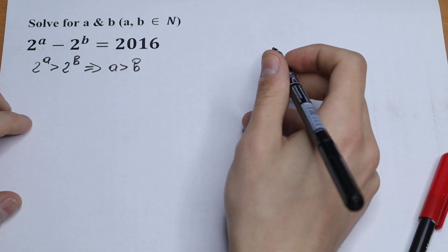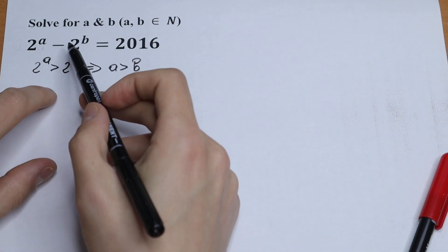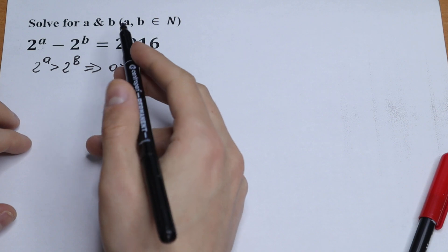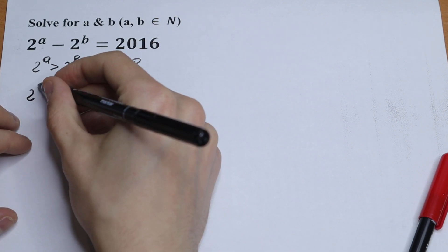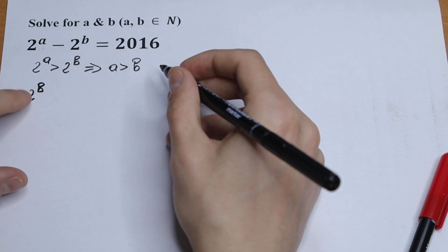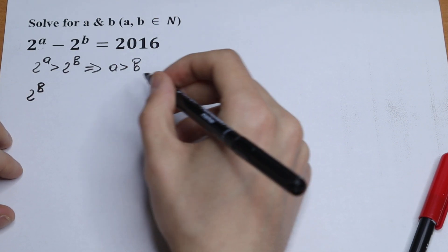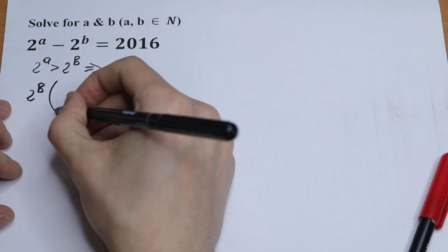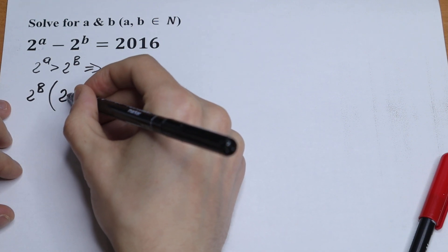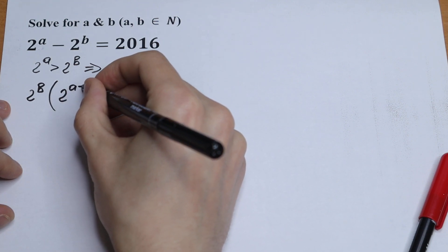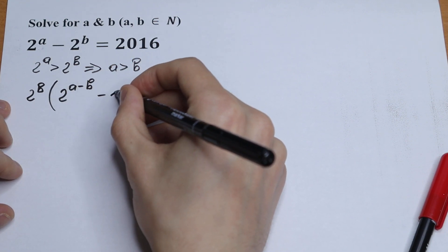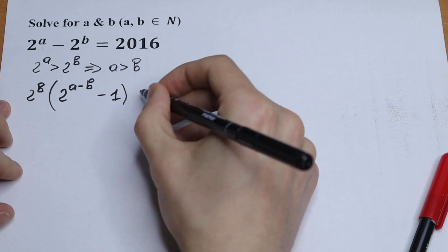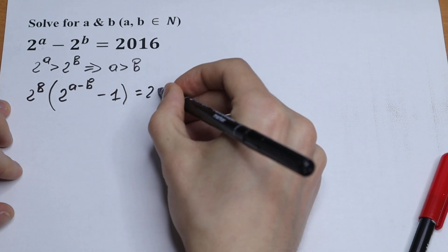So what are we going to do next? Let's factor out 2 to the power b. We will have 2 to the power b, and in parentheses we will have 2 to the power (a minus b) minus 1, equal to 2016.